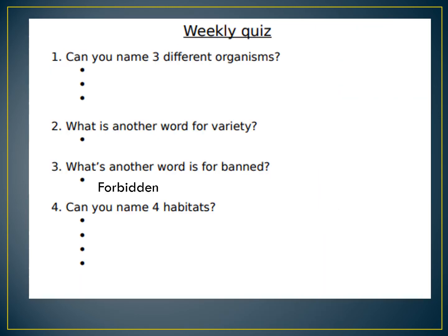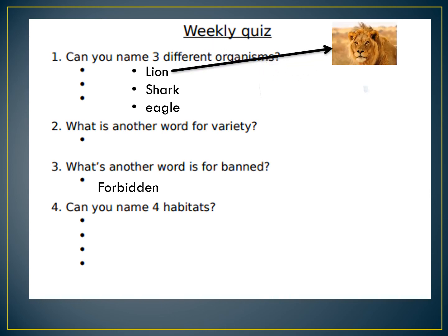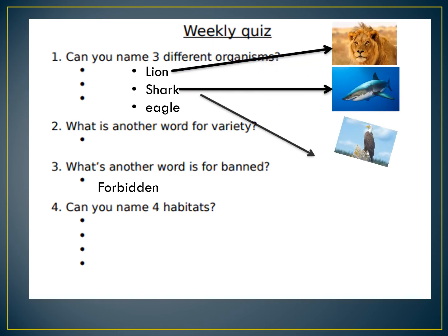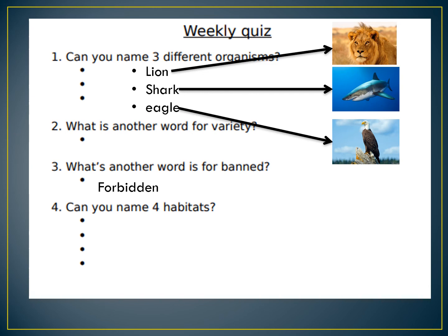Weekly quiz. Can you name three different organisms? Lion, shark, eagle — there were loads of different animals, plants, or single-celled life forms you could have chosen; these are just three examples. What is another word for variety? There were lots of different words you could have used, but two examples are diversity and array.